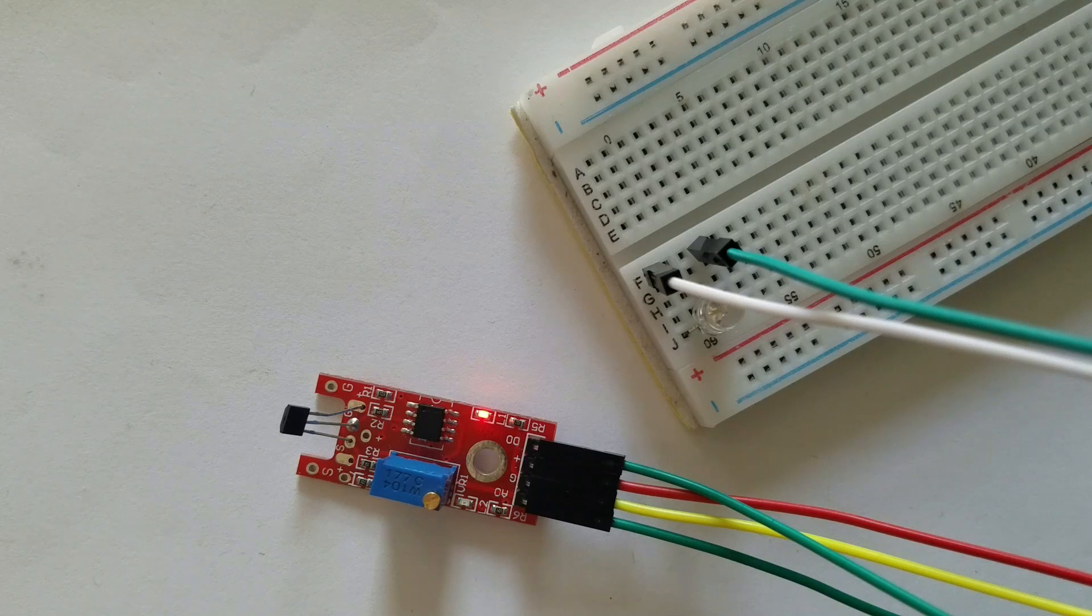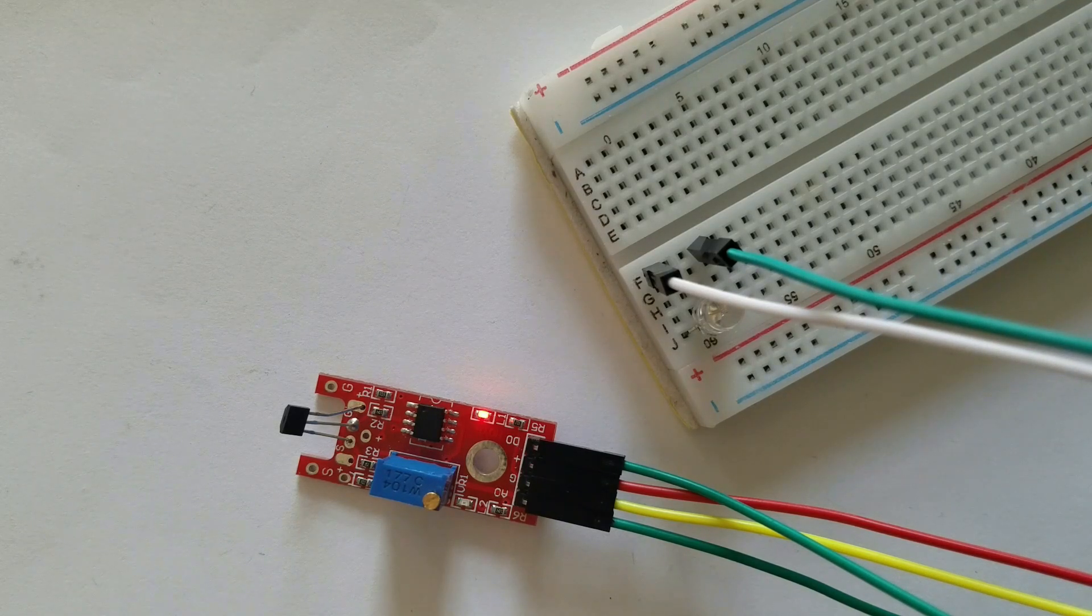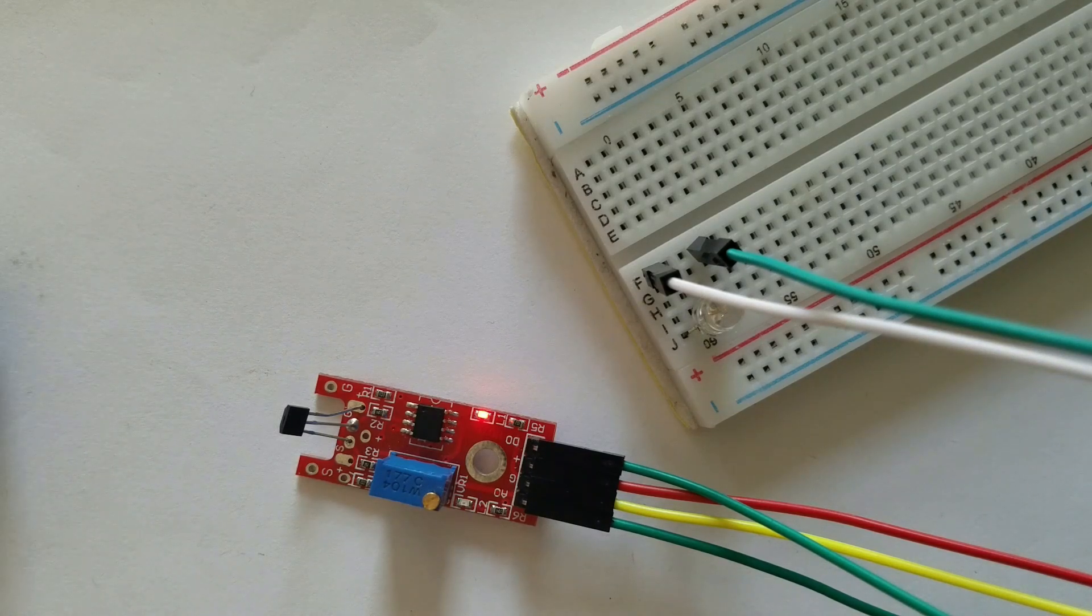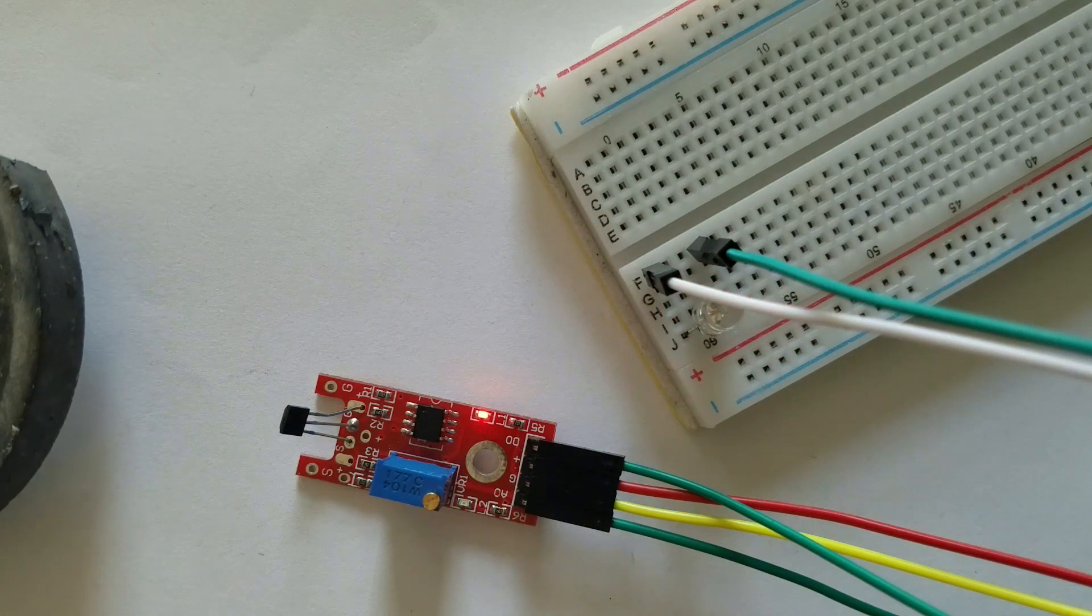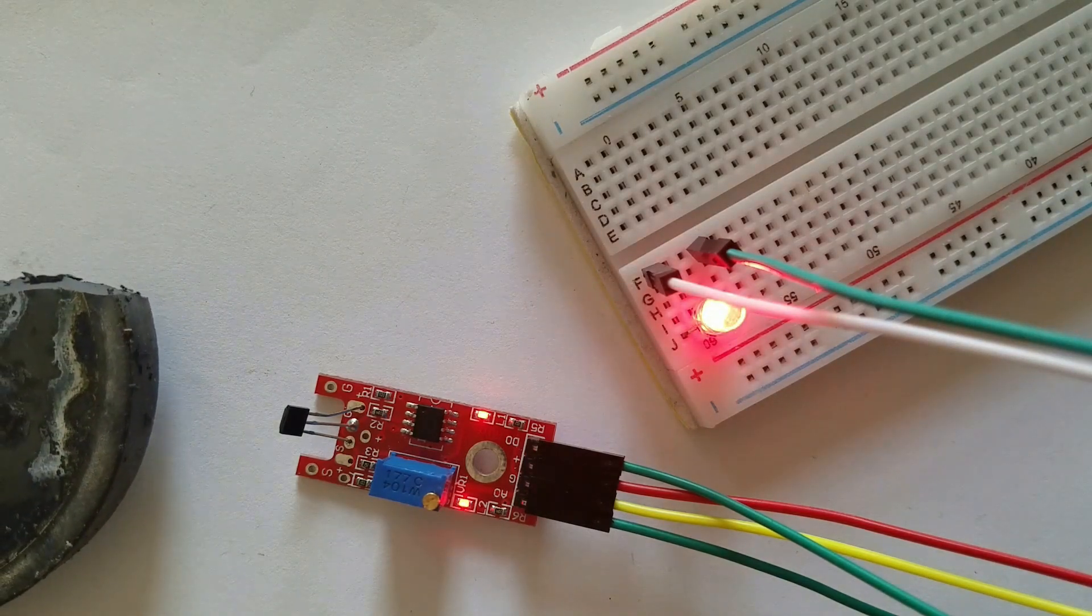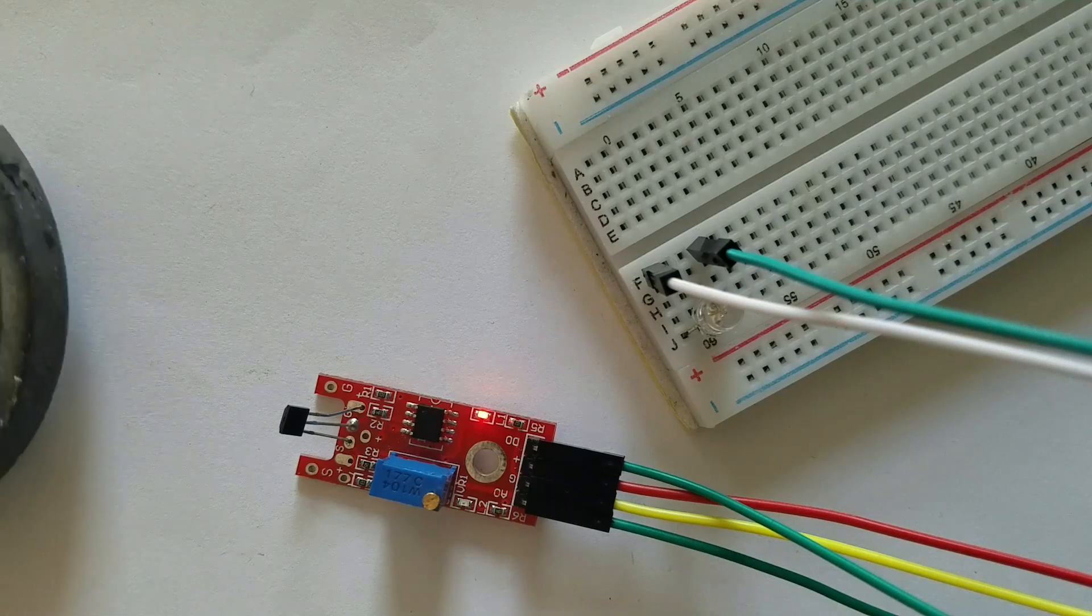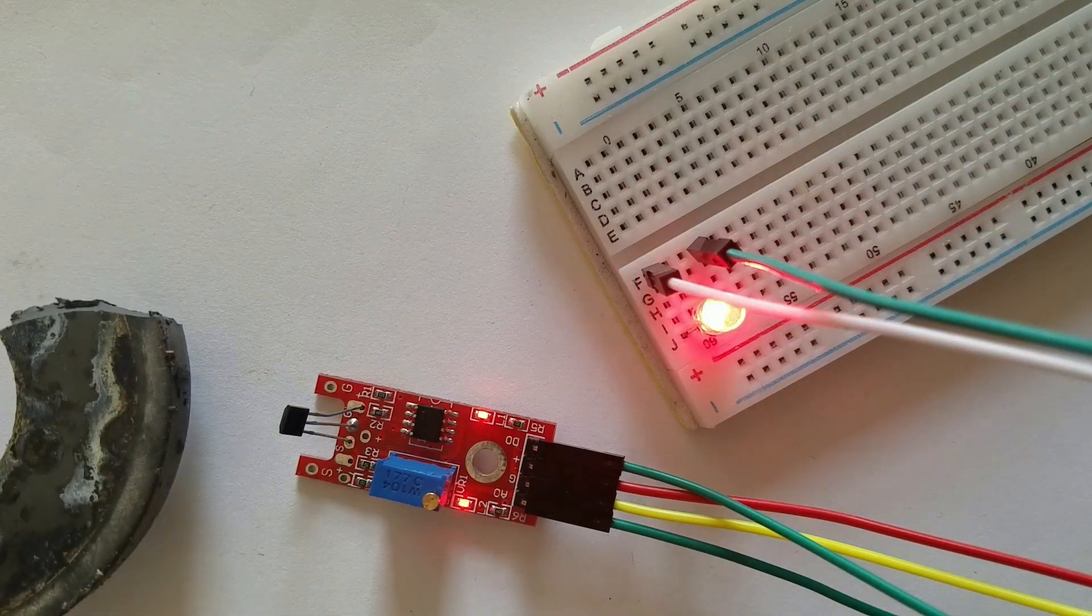This sensor is used to detect the magnetic field. It can react in the presence of a magnetic field. It has a potentiometer to adjust the sensitivity of the sensor and it provides both analog and digital outputs.